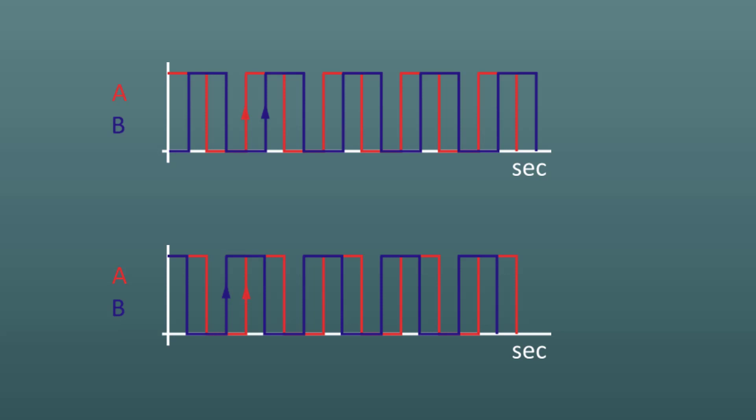If you add pulse counts when the A pulse comes first and subtract pulse counts when the B pulse comes first, the result will be the total number of slits the grating has moved clockwise. This setup is referred to as quadrature.